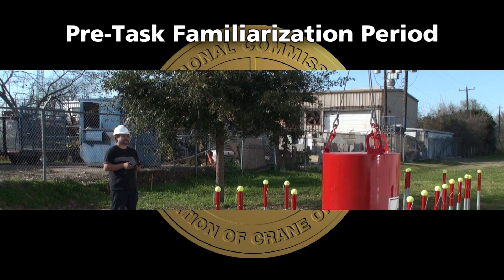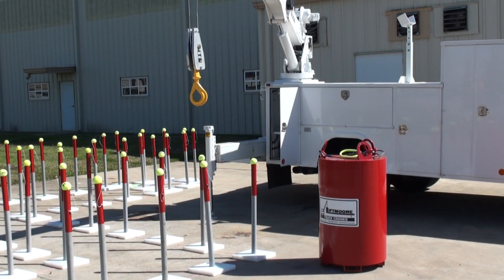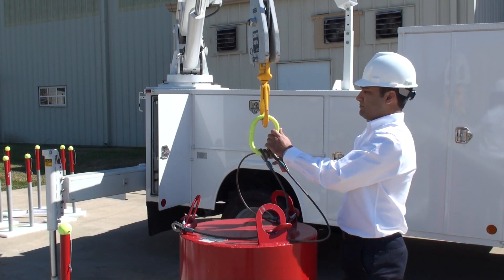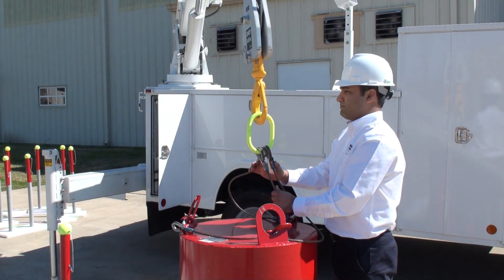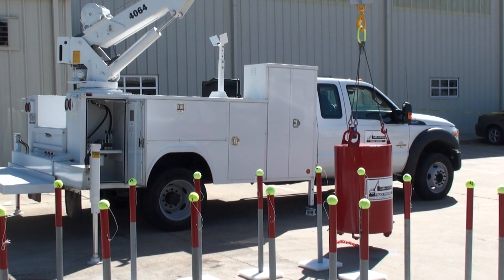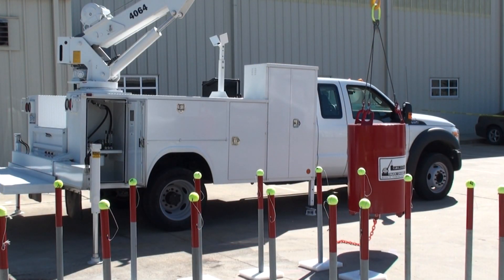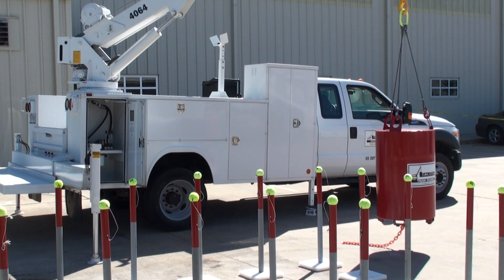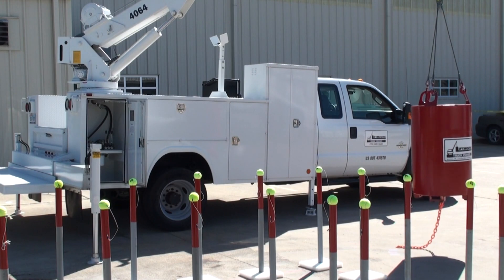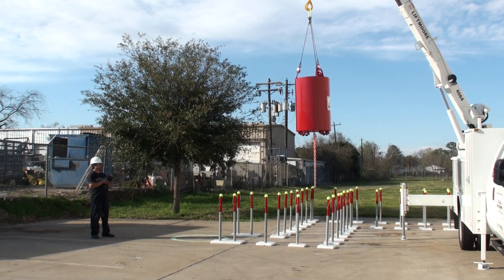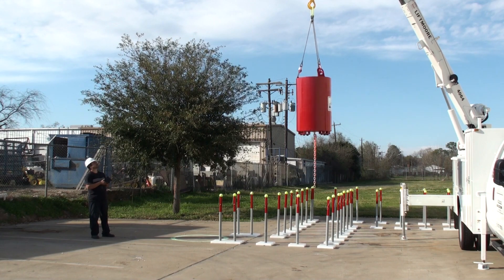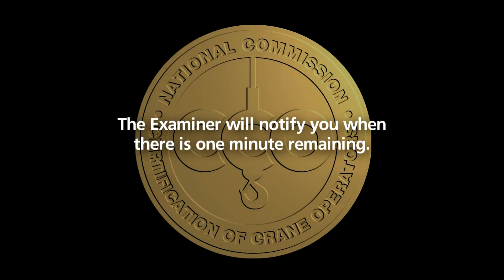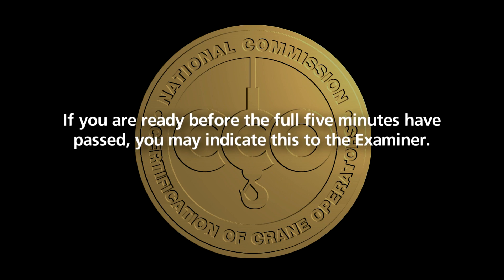Pre-task familiarization period. At the examiner's indication, bring the hook over to the test weight located in the test weight area. The load will be attached by either the examiner or proctor. You will be allowed to lift the test weight and get the feel of the load before beginning the next task. You may not shadow the zigzag corridor. You will be allowed 5 minutes for this pre-task familiarization period. At the end of this time, you must place the test weight on the ground inside the test weight area. The examiner will notify you when there is 1 minute remaining. If you are ready before the full 5 minutes have passed, you may indicate this to the examiner.